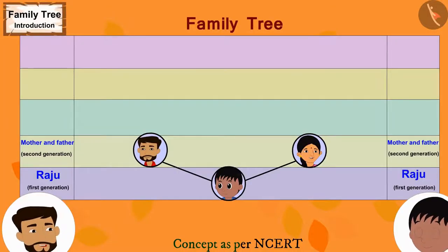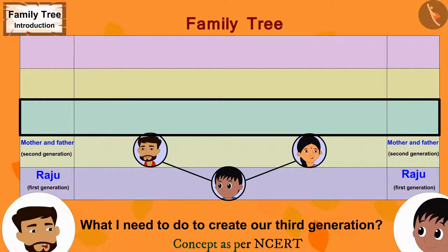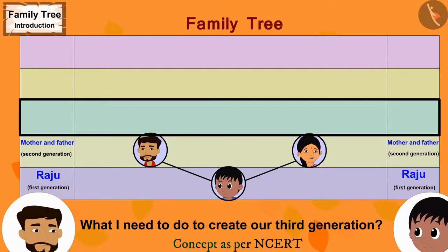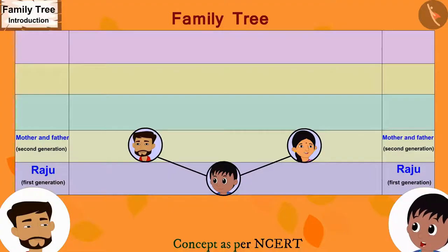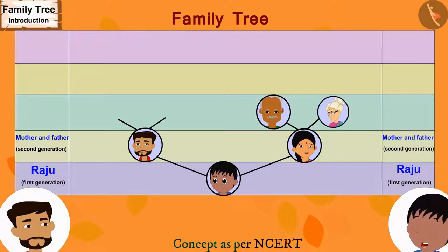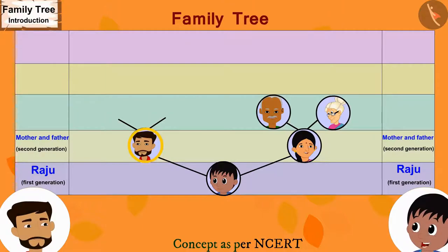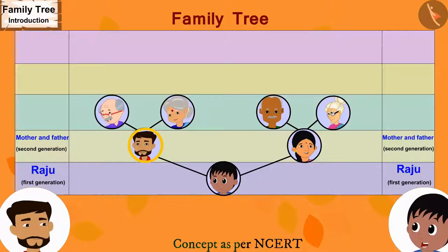Raju, now can you tell me what I need to do to create our third generation? Father, you have to draw two lines each above your and mother's names. You have to write maternal grandfather and grandmother's names on the two lines above mother's name, and paternal grandfather and grandmother's names above your name.